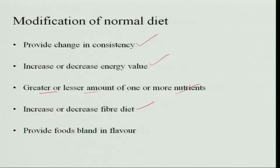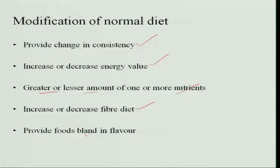You also increase or decrease fiber in the diet — this especially applies in cases of constipation or diarrhea. If the person has constipation, you increase fiber so stools become soft and constipation is relieved. In diarrhea, you decrease fiber because residue formation needs to be reduced, and decreasing fiber reduces transit time, so diarrhea decreases. Additionally, provide foods bland in flavor when the person cannot tolerate certain flavors.